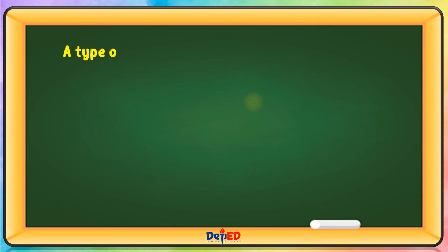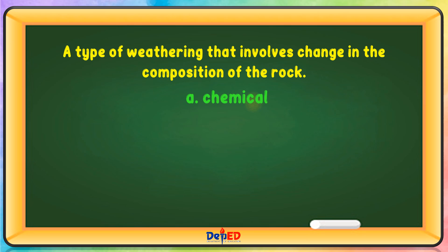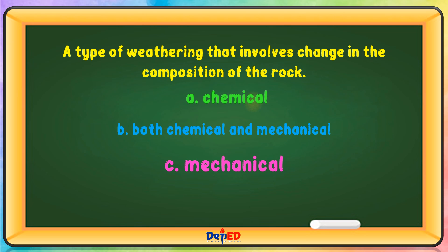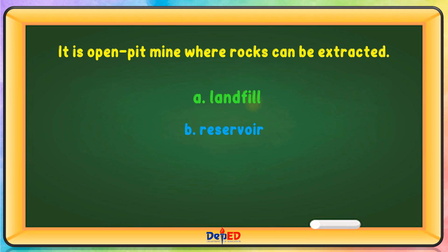A type of weathering that involves change in the composition of the rock. A. Chemical. B. Both chemical and mechanical. C. Mechanical. D. Electrical. The correct answer is A. It is an open-pit mine where rocks can be extracted. A. Landfill. B. Reservoir. C. Open field. D. Quarry. The correct answer is D.